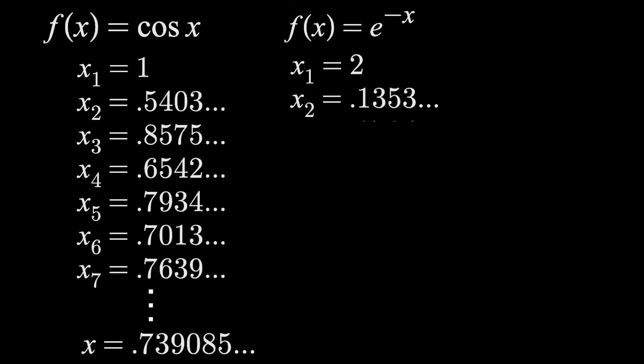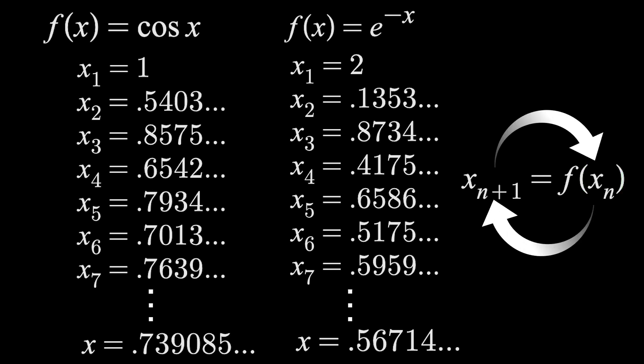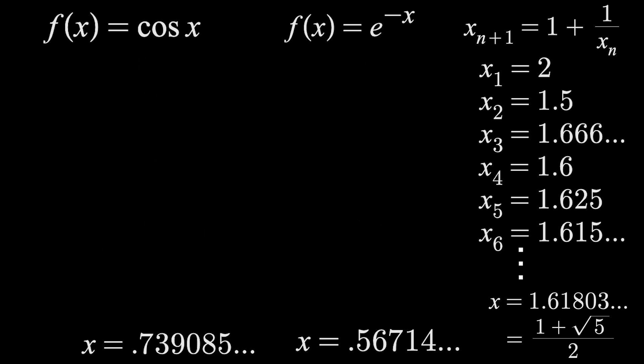If we do it with e to the minus x, we get .5671 and so on. Notice what we're doing here is a very simple iteration formula, where the next term in the sequence is just f of the previous. Plug something in, get an output, plug that back in, and continue. And by understanding what these numbers at the bottom represent, we can understand why an iteration like this amazingly approaches the golden ratio, or 1 plus root 5 over 2. What we're finding with these iterations is the value in which the input equals the output, or where f of x equals x, also known as a fixed point.